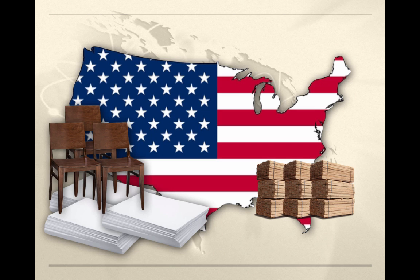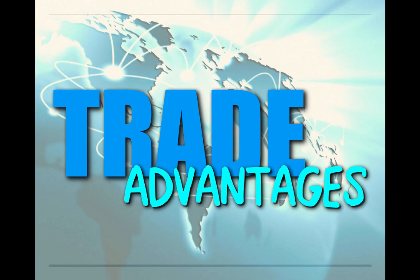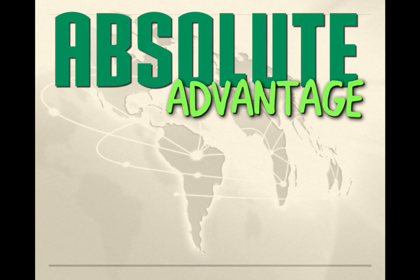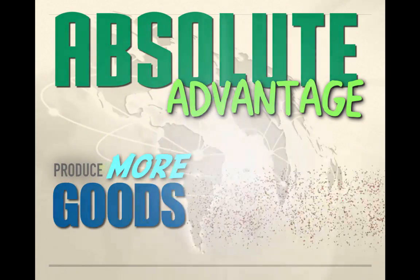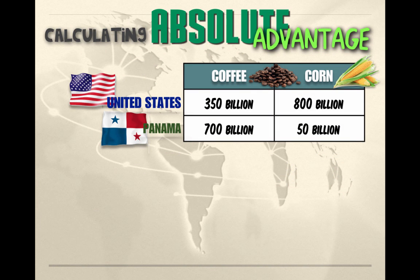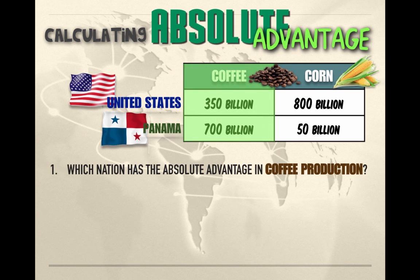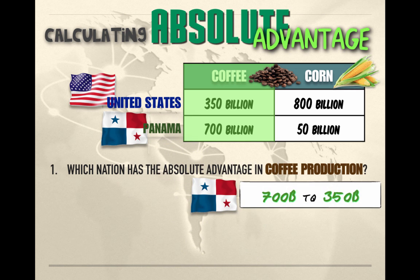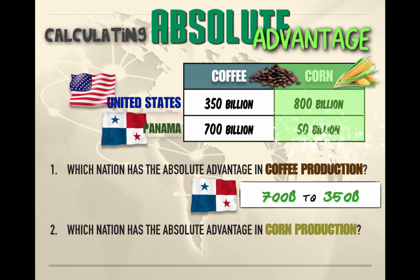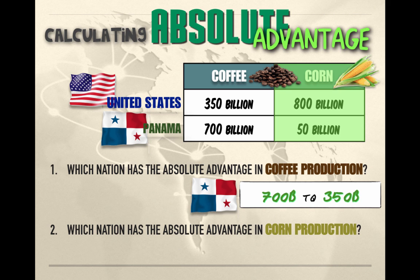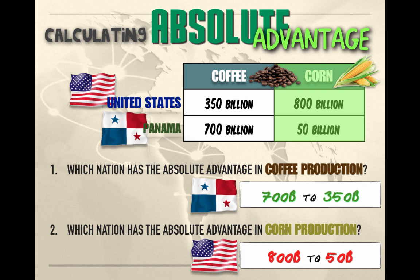How do we find trade partners? Trade partners are found by analyzing trade advantages. The first advantage is called absolute advantage — a condition where a country can produce more goods than their trade partner, or produce the same amount using fewer inputs. For example, if Panama can produce 700 billion tons of coffee and the United States can only produce 350 billion tons, Panama has the absolute advantage. And if the United States can produce 800 billion tons of corn versus Panama's 50 billion tons, the United States has the absolute advantage in corn. Absolute advantage is really easy.